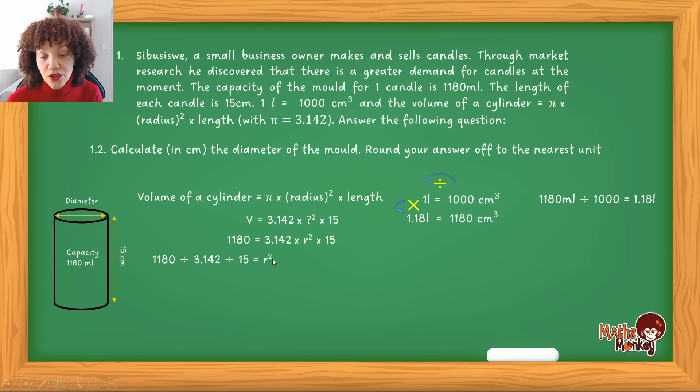So I've got 1180 divided by 3.142 divided by 15. And this gives me my radius on the right by itself. If I simplify that, I get 25.13713, etc. Remember, I'm not rounding off any answers. I only round off my final answer.